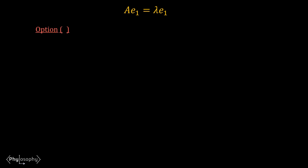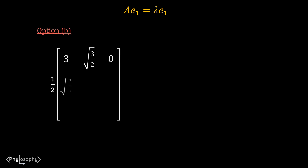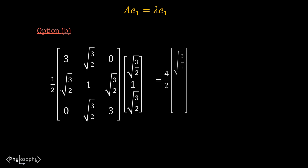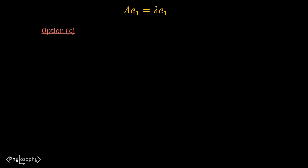For option B, if you multiply the vector with matrix A, you will get 4/2 times the eigenvector. Therefore, the eigenvector given in option B also satisfies the equation A·e1 = λ·e1, where λ = 4.